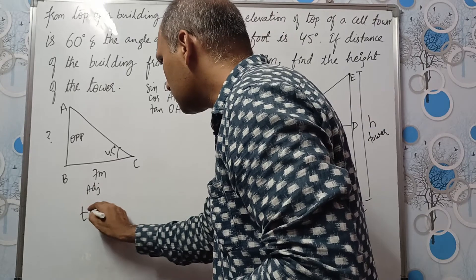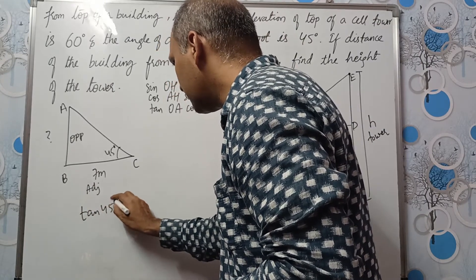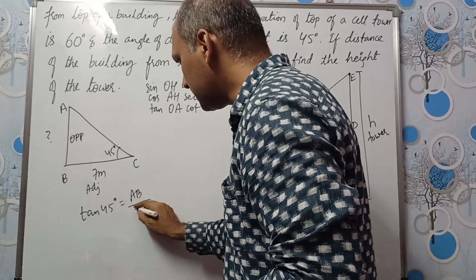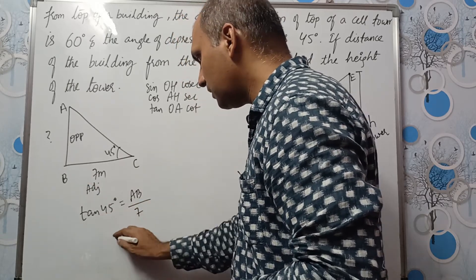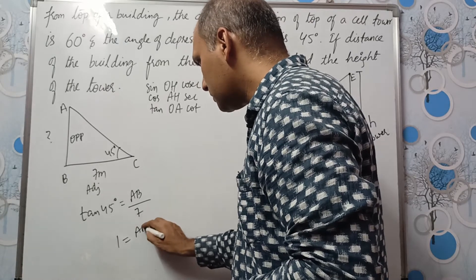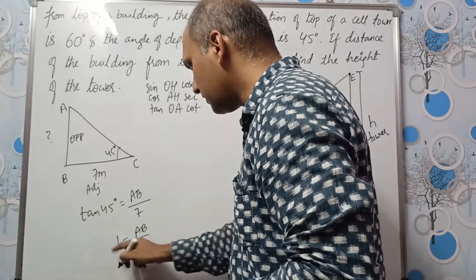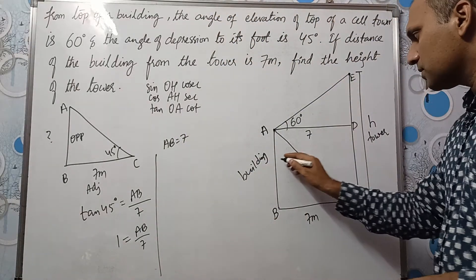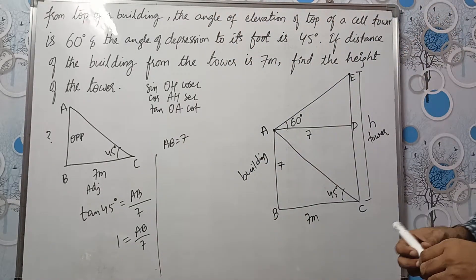So tan 45 degrees is equal to opposite side is AB divided by BC adjacent is 7. Tan 45 is 1. So we have AB divided by 7. 7 goes that side. AB will be equal to 7.